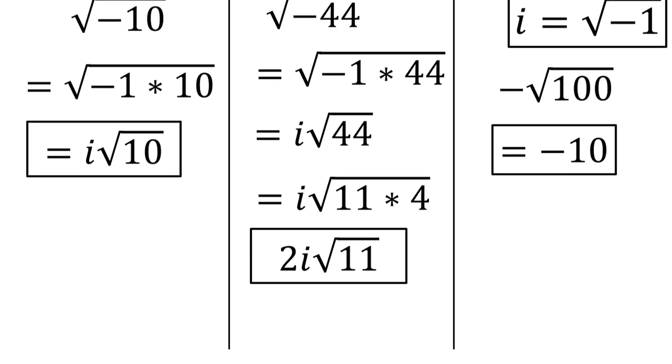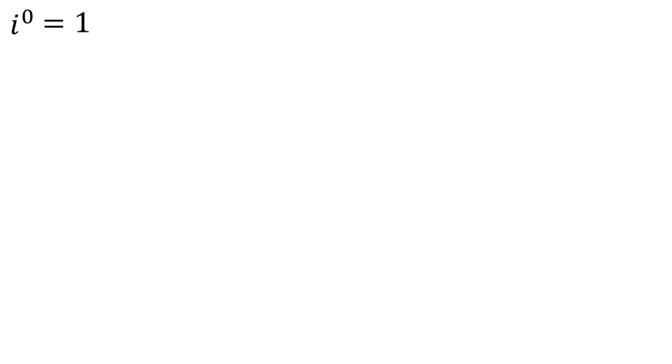It gets a little bit interesting when you start to think about powers of i. If you have i to the zeroth power, that's the same thing as positive 1. We know that anything to the zero power, other than zero, should equal 1, and i to the zero power also follows that rule.